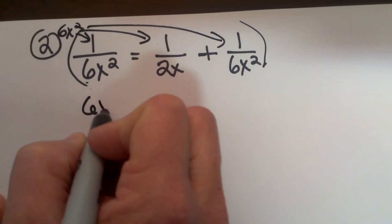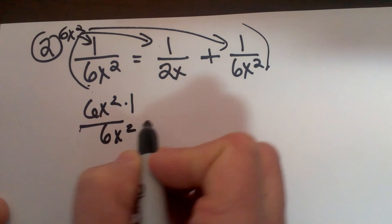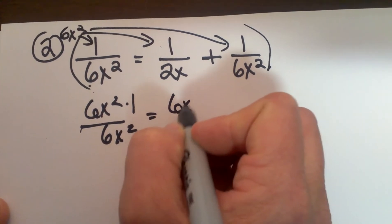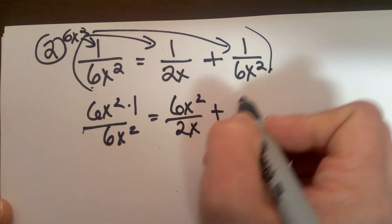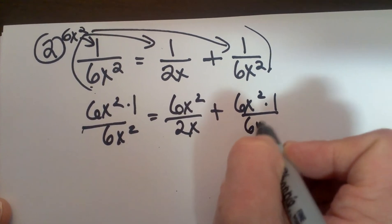Ok so the first one is going to be 6x squared times 1 over 6x squared equals 6x squared over 2x plus 6x squared times 1 over 6x squared.